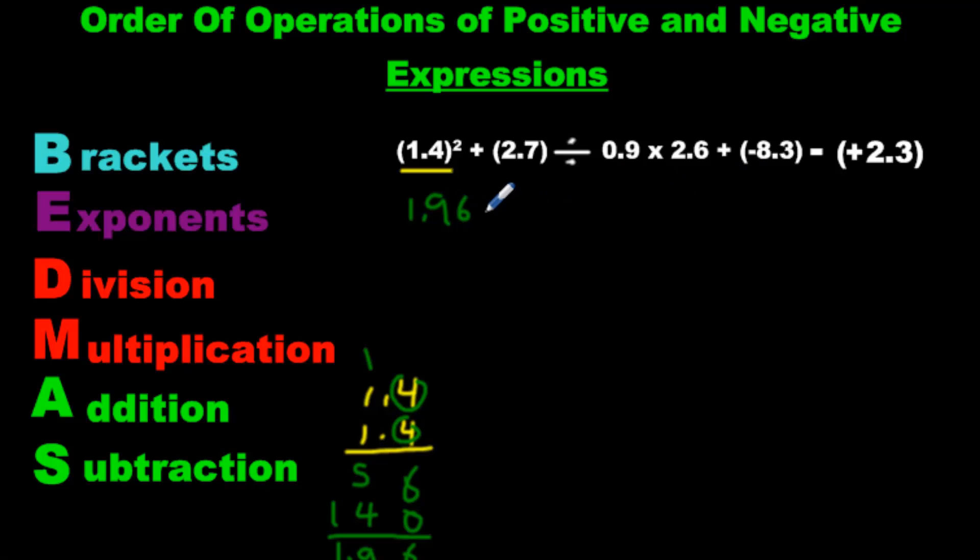And now I rewrite everything else. Plus 2.7 divided by 0.9 times 2.6. It sounds tedious. It looks tedious, but it's necessary. Negative 8.3. And I can squeeze that in. 2.3. Now we go on to step two. We have done the exponents. So I can scratch brackets off. I can scratch off exponents. Now I go to division, multiplication, and I've color coded them the same way because whichever one comes first, left to right in the equation, is what you do first.